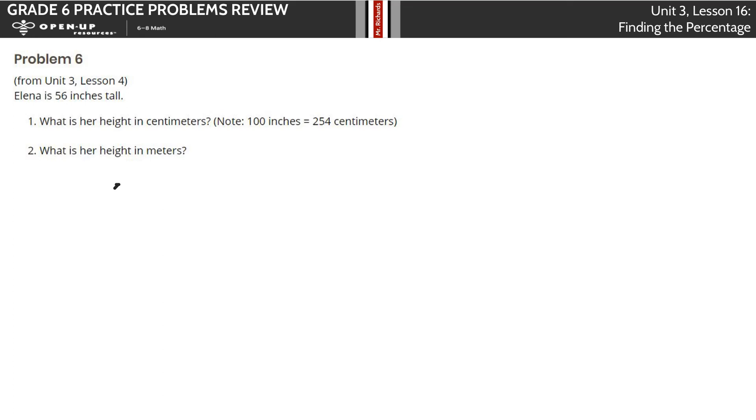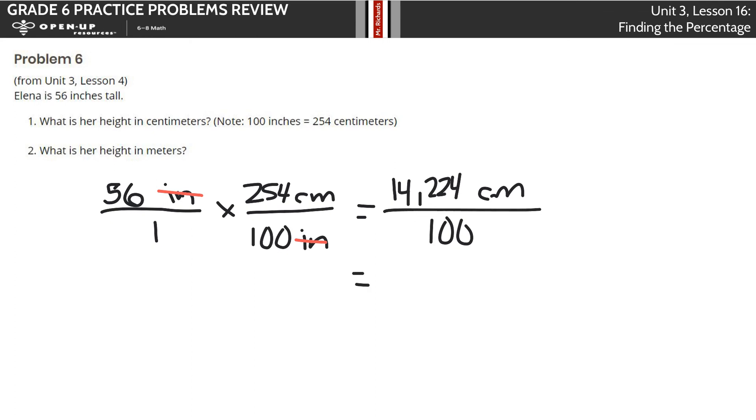What's her height in centimeters knowing that 100 inches is 254 centimeters? If I have 56 inches over one, and I multiply that by my fact that 254 centimeters is equal to 100 inches, the inches as a unit cancels out. I need to take 56 and multiply it by 254, and that is 14,224 centimeters for those 100. Divide by 100 now, and this becomes 142 and 24 hundredths centimeters.